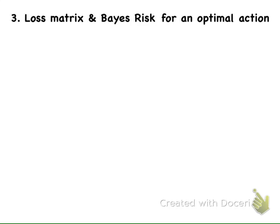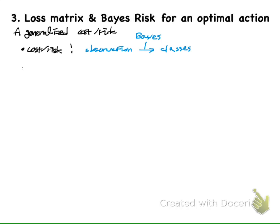In this section, we will talk about what the loss matrix is and the base risk for an optimal action. First, we can view the loss matrix as a generalized cost or risk. Previously, the cost or risk mapped an observation to an optimal classification decision that will minimize the risk or cost. Now, the loss matrix will map an observation to an optimal action that will minimize the risk or cost. Let us look at it in more detail.